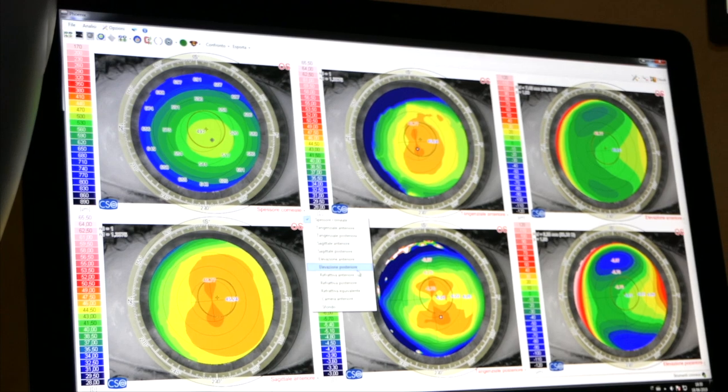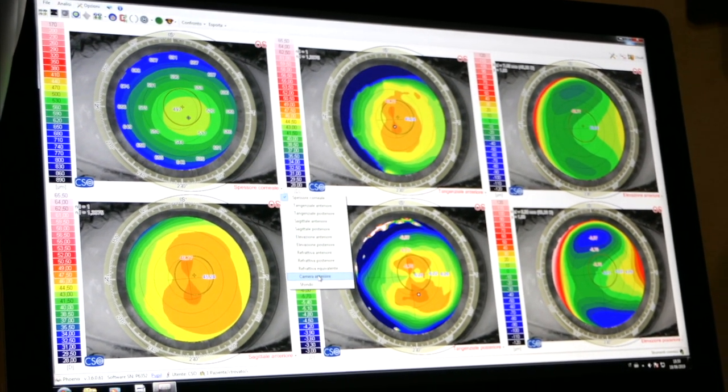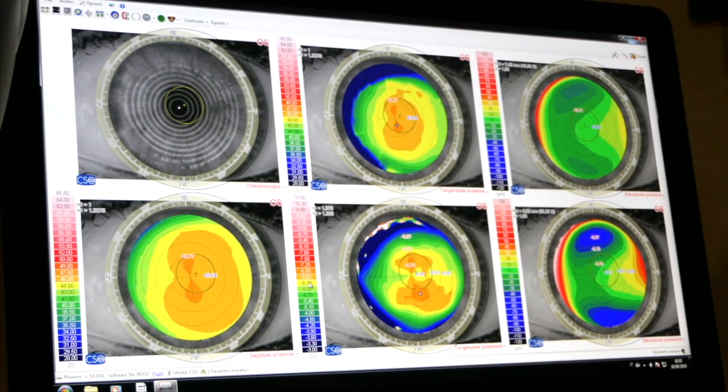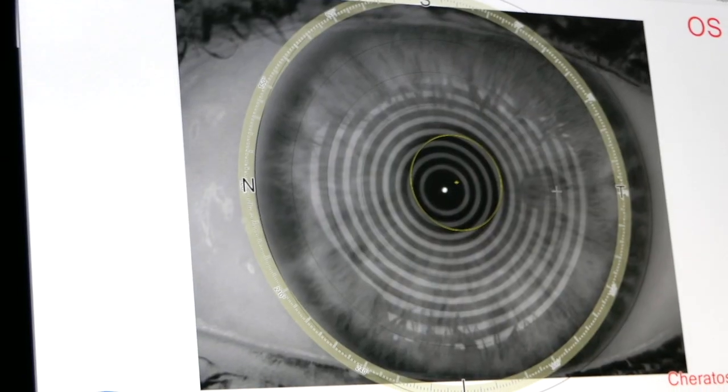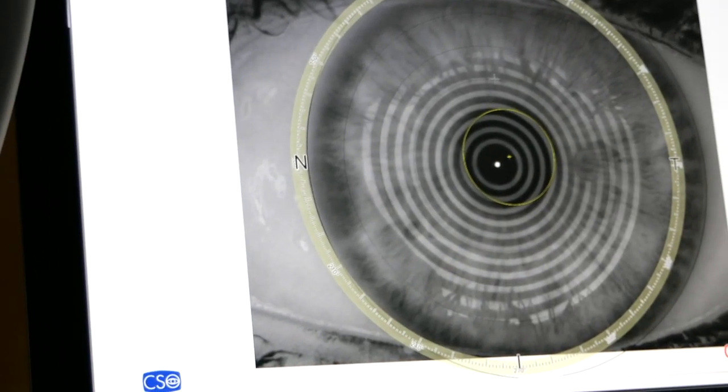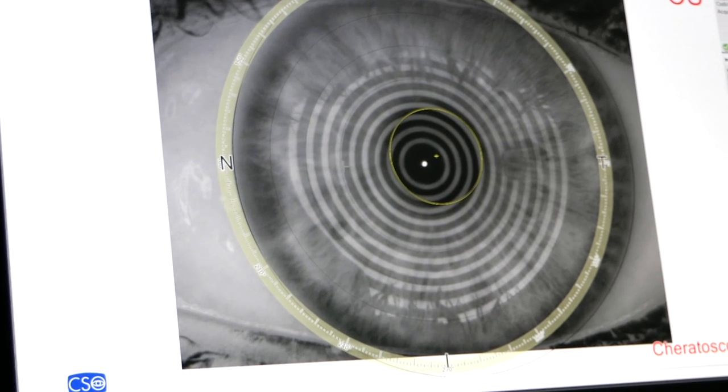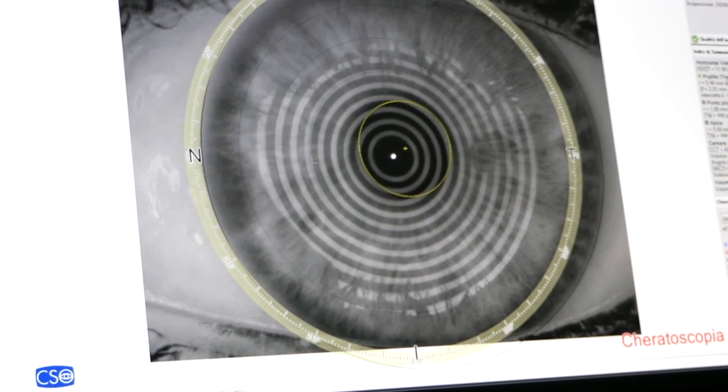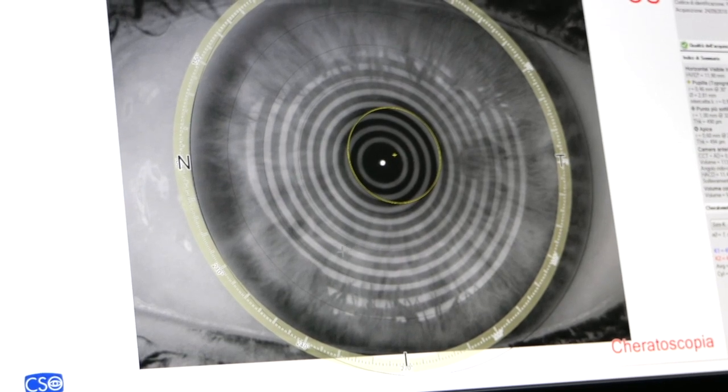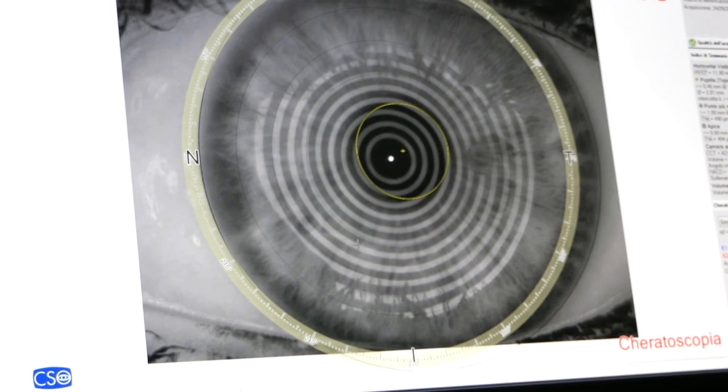Depending on how they are reflected, the computer is able to interpret and define what is the range of curvature of the cornea. The smaller the reflected circles are, the more the cornea is curved.